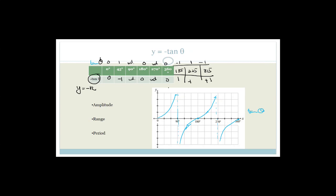So when x is 0, y is 0; at 45°, y is minus 1; 90° is still an asymptote; at 135°, y is plus 1; at 180°, y is 0; at 225°, y is minus 1. It forms a mirror image — we've swapped the sign of all y-values. Amplitude is infinity, range is minus infinity to infinity, and the period is 180 degrees.